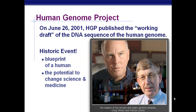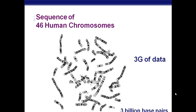In June 2001, the Human Genome Project published the working draft of the DNA sequence of the human genome — a very historic event, providing us the blueprint of a human and the potential to change science and medicine. The sequence in 46 human chromosomes is equivalent to 3 gigabytes of data. The human genome has 3.2 billion bases.